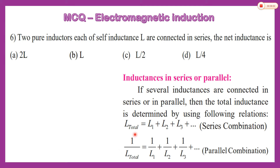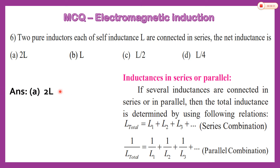When inductances are connected in series, the resultant inductance is maximum — that is the sum of individual inductances. When we connect them in parallel, 1/L_total = 1/L1 + 1/L2 + 1/L3. For two inductors each of value L connected in series, the answer is 2L.